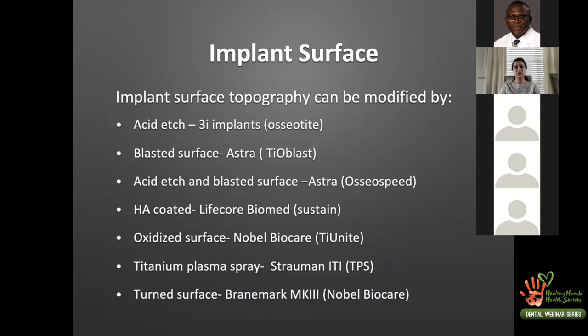Threads and micro-grooves help guide implant placement. Active threads are very aggressive and can guide or change angulation; they provide mechanical interlocking and increase bone-to-implant contact area. Implant surface modifications are numerous — every company has patented its own surface: Nobel has TiUnite (oxidized surface), Astra has the TiOblast blasted surface, and Straumann has the TPS (titanium plasma spray) surface, among others.